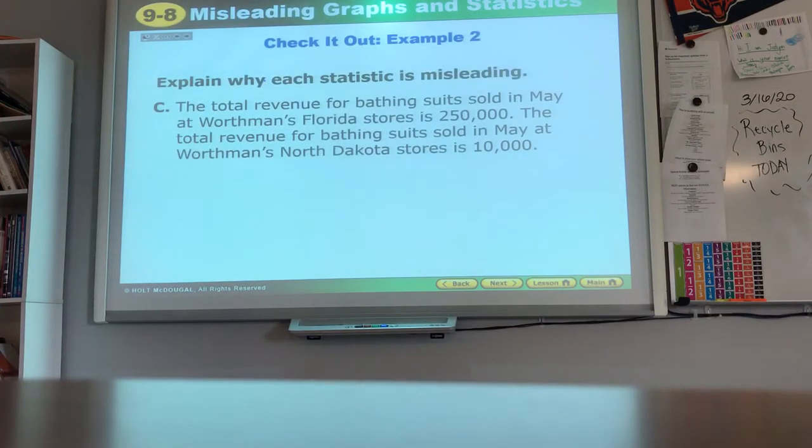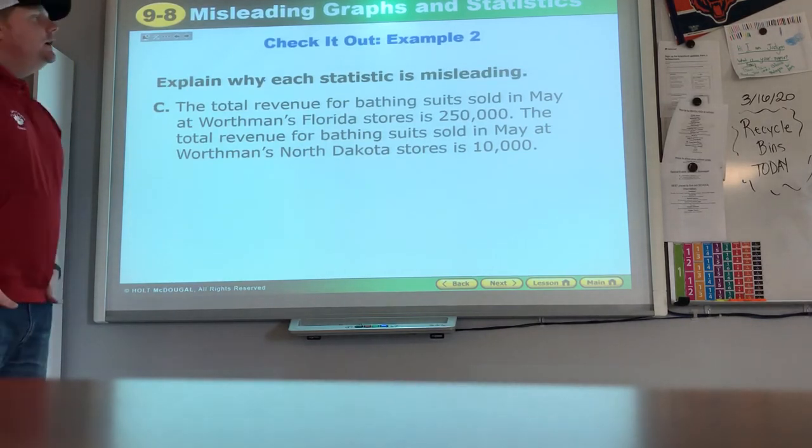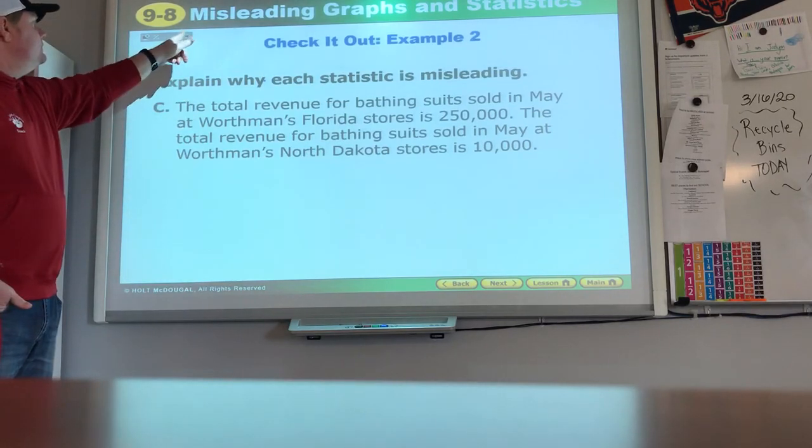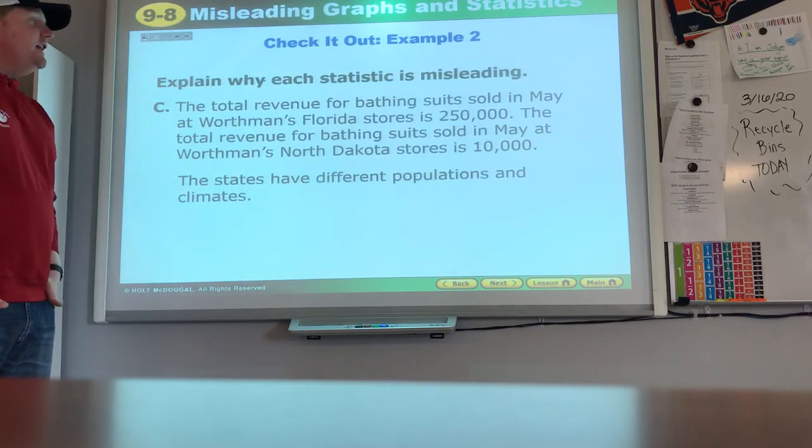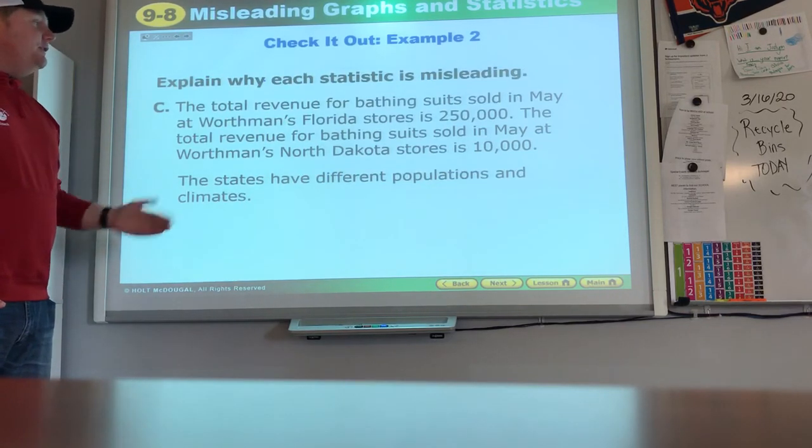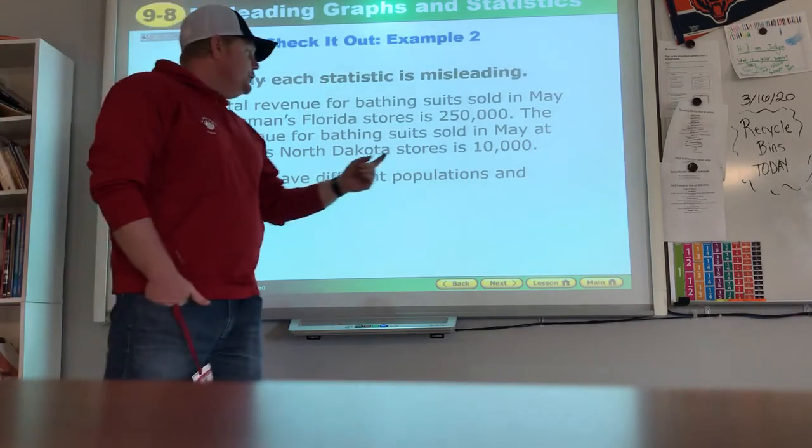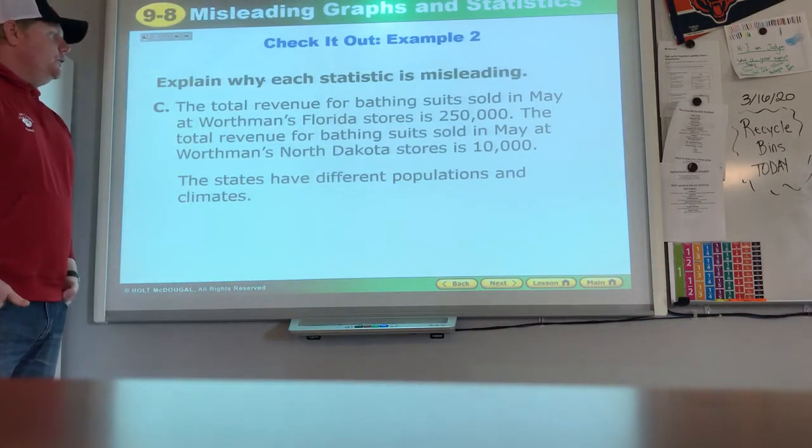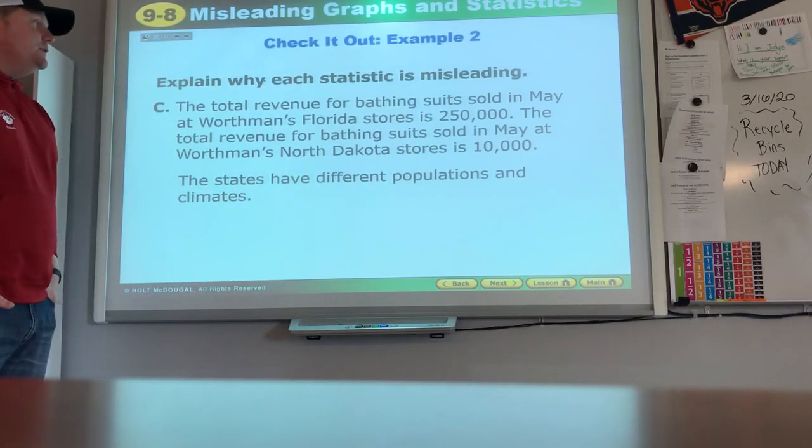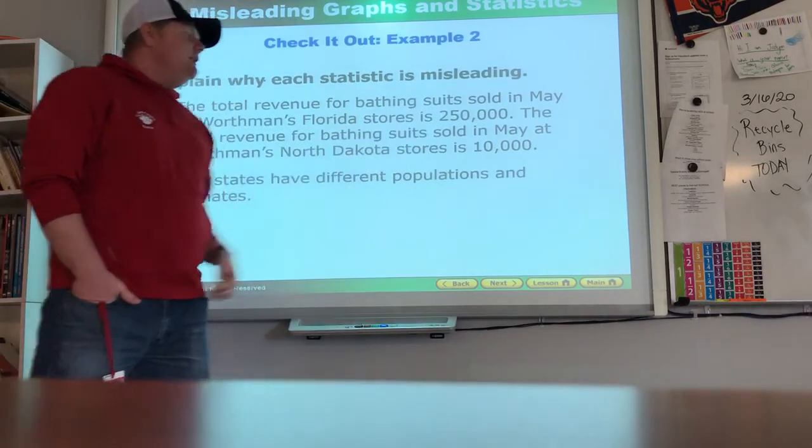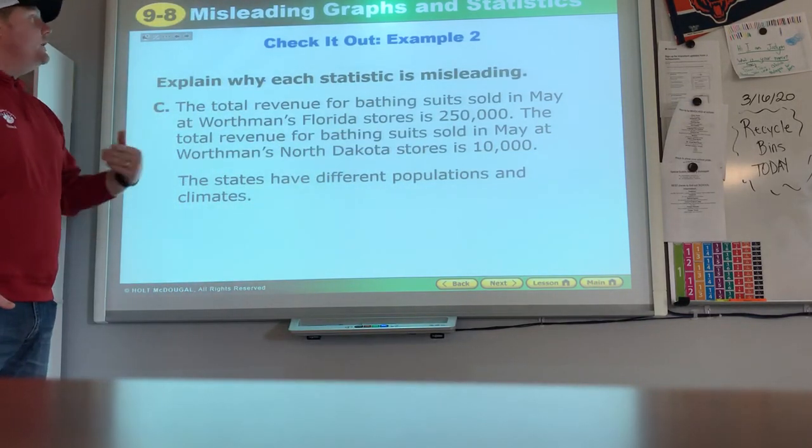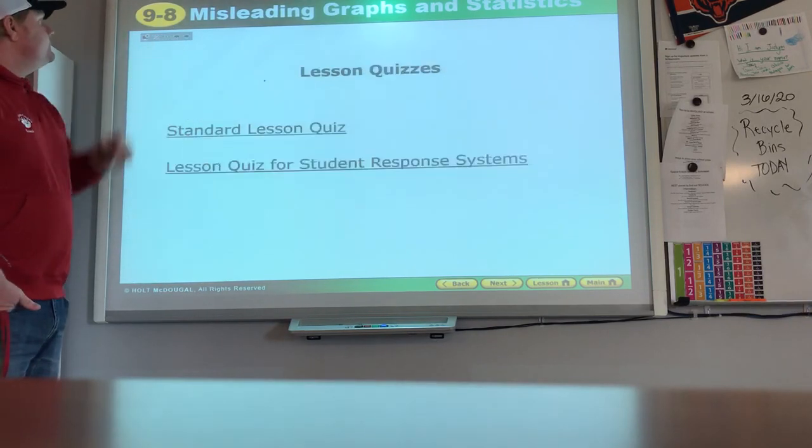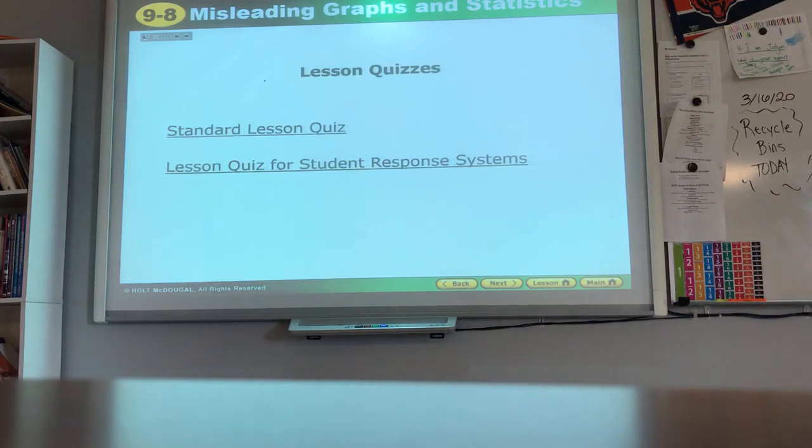The total revenue for bathing suits sold in May at Woolworth's Florida stores is $250,000. The total revenue for bathing suits sold in May at Woolworth's North Dakota stores is $10,000. Those are facts. But here's why it's misleading. The states have very different populations now and very different climates. There's much less need for bathing suits in North Dakota in May. You probably have to wait till June or July to swim, whereas in Florida in May it's getting very hot and they have a much bigger population. So we have to think about those things. You're ready to move on. Don't be tricked.